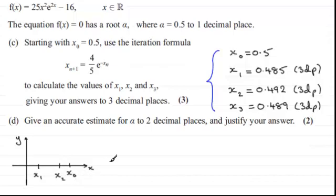And then when we found x₃, it was less than x₂, but more than x₁. So it's going to be, say, there. So our root α is somewhere then between x₂ and x₃. So when I look at x₂ and x₃, I'm thinking that that root then is most probably going to be α equals 0.49 to two decimal places.